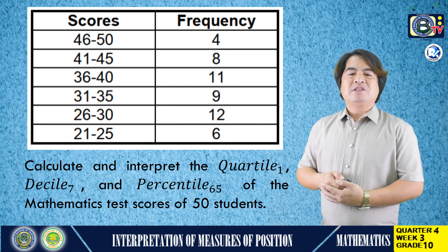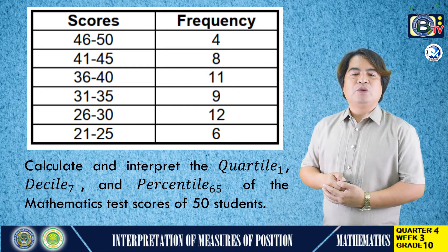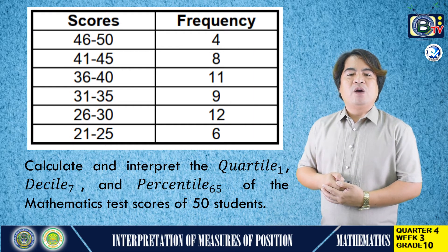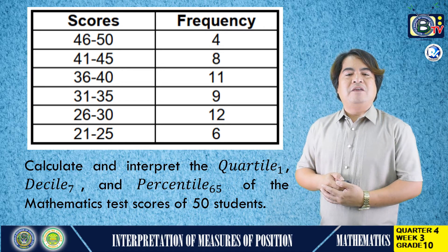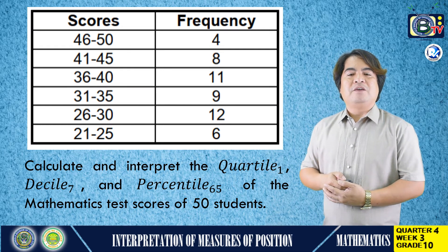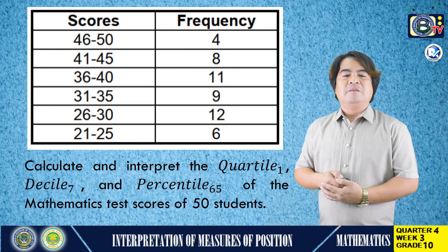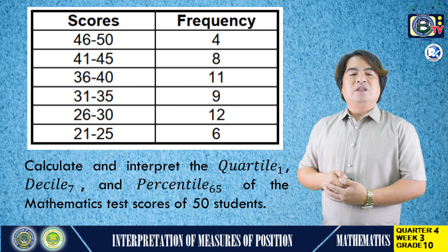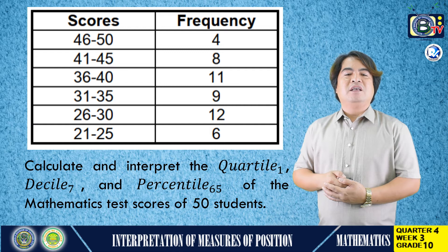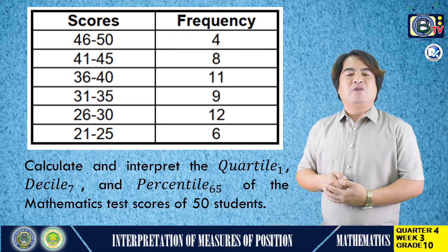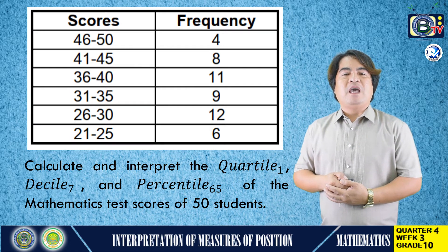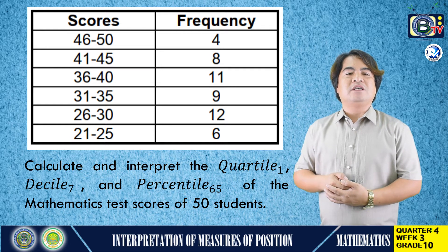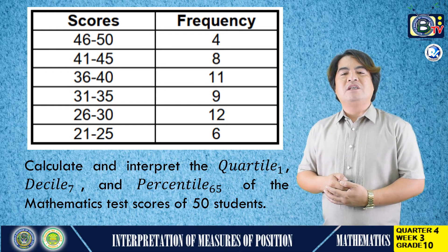From the scores: 21 to 25 has a frequency of 6; 26 to 30 has a frequency of 12; 31 to 35 has a frequency of 9; 36 to 40 has a frequency of 11; 41 to 45 has a frequency of 8; and 46 to 50 has a frequency of 4.